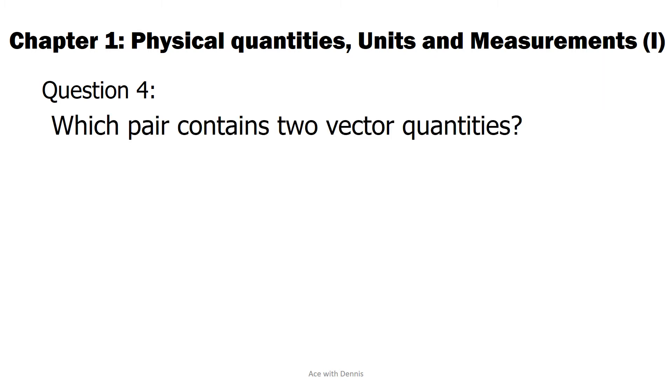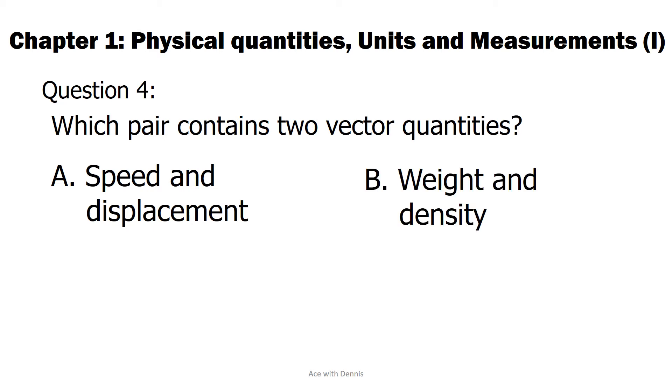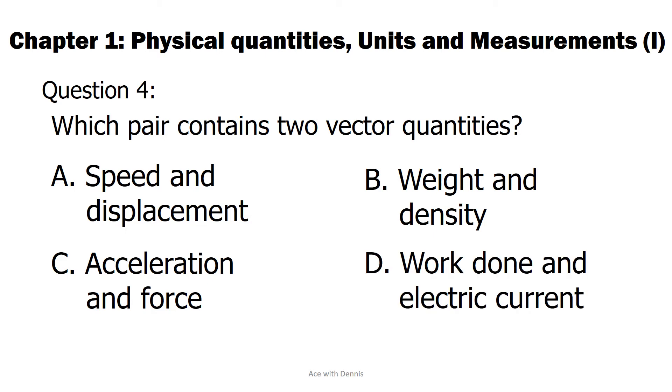Question 4: Which pair contains two vector quantities? A. Speed and displacement. B. Weight and density. C. Acceleration and force. The answer is C. Acceleration and force. Speed, density, work done and electric current are scalar quantities. Displacement, weight, acceleration and force are vector quantities.